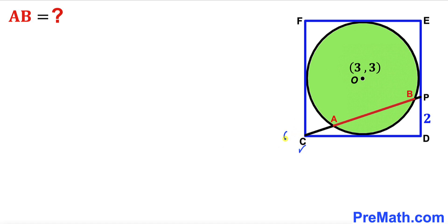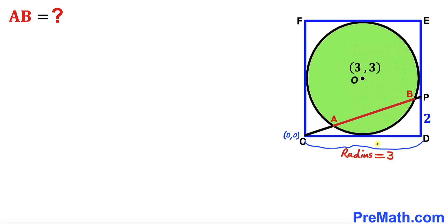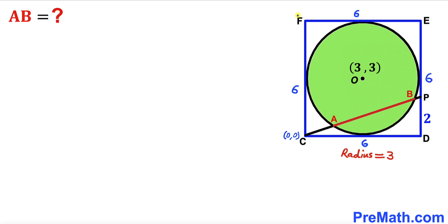I'm going to label point C as the origin (0, 0). Since the center is (3, 3), the radius of this circle is 3. Therefore the side length CD is 3 plus 3 equals 6 units. Since we are dealing with a square, all side lengths of this blue square are 6. So I can label F as (0, 6), E as (6, 6), and D as (6, 0).